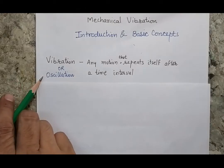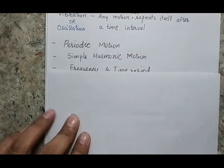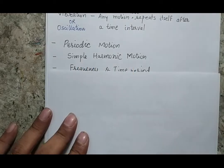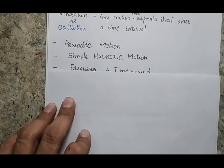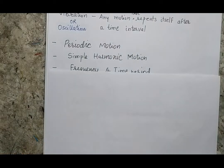Vibration and oscillation are interchangeable terms. In this session we are going to talk about periodic motion and also simple harmonic motion, because certain students have confusion about the difference between periodic motion and simple harmonic motion. Oscillation is a general term; periodic motion is any repetitive motion, but simple harmonic motion is a very special kind of periodic motion where the amplitude about the mean position remains constant.